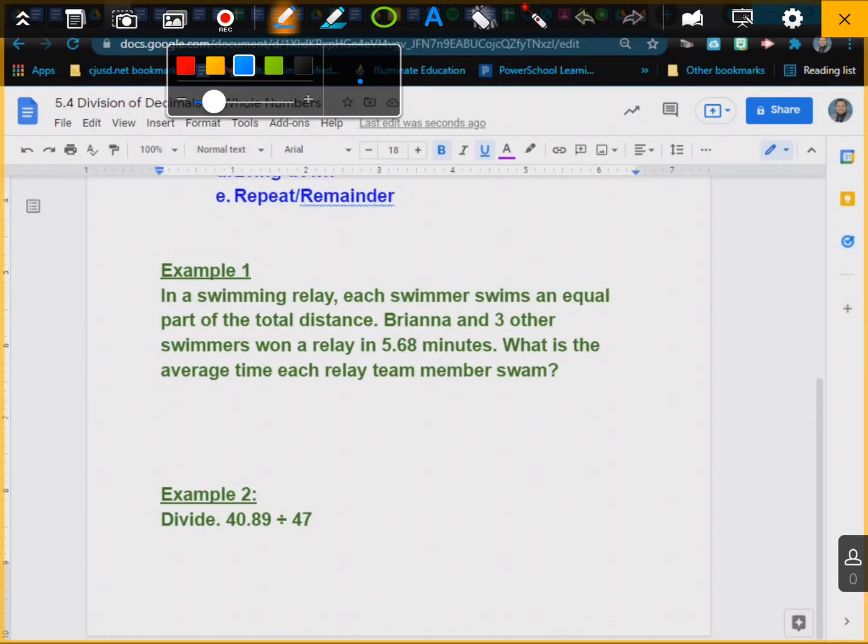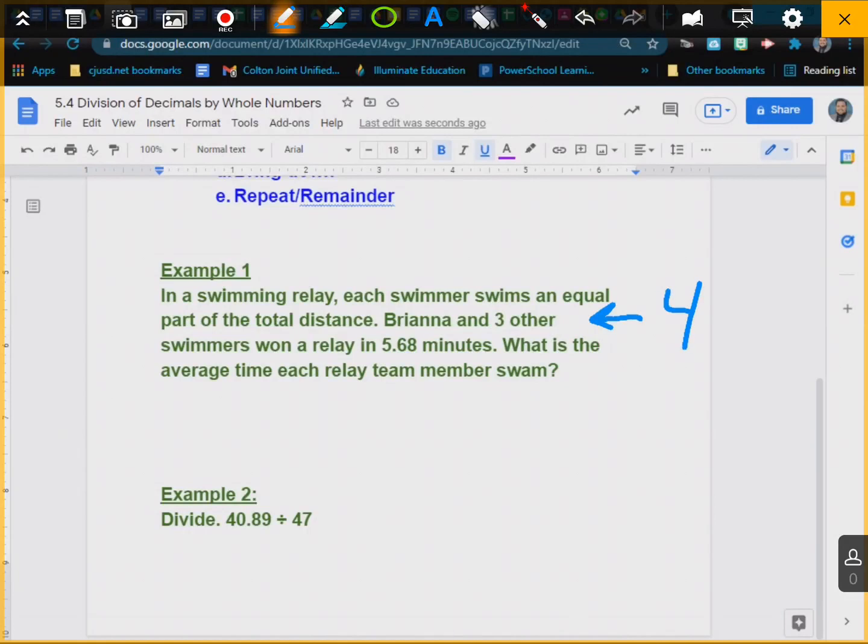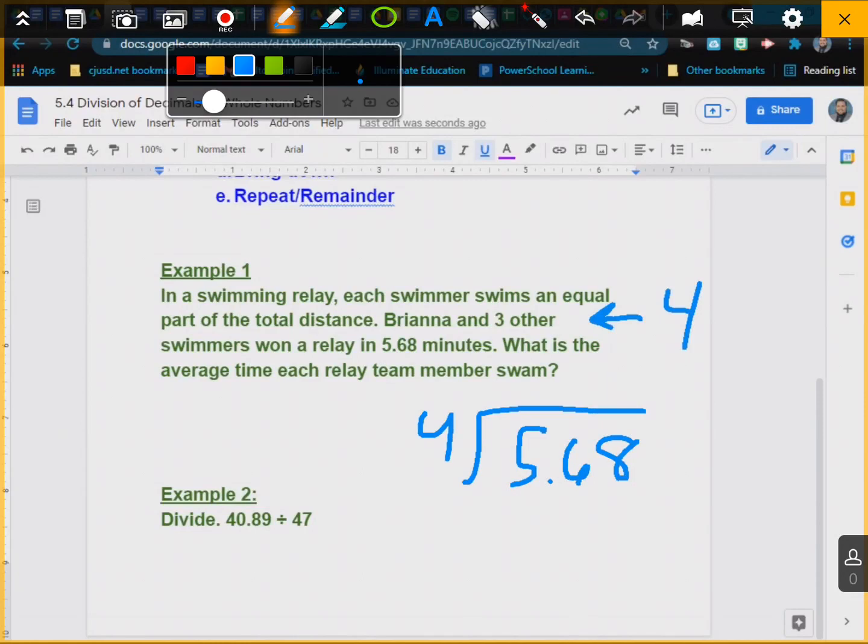So Brianna plus three makes it four. It's a little tricky, you need to watch that. Brianna and three swimmers makes four. So you're taking 5.68 and you're dividing it by four. The first thing you need to do is put the decimal directly above. That's an arrow, by the way.